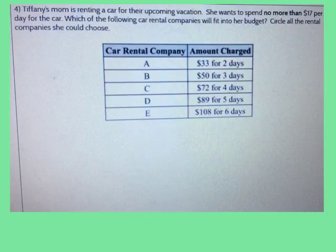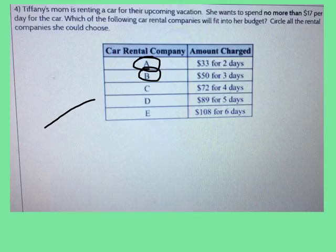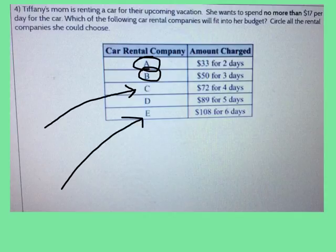For this problem, you need to find all of the car companies where there would be no more than $17 spent per day. Go ahead and answer the question on your own and check back here for the answer in a moment. A and B are the only correct answers. Go ahead and tell me, what would be the rate per day for option C? And what would be the rate per day for option E?